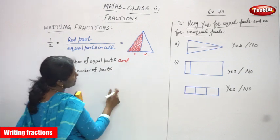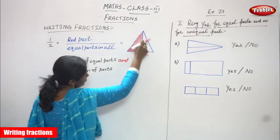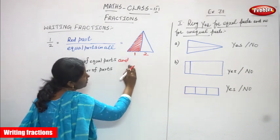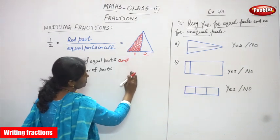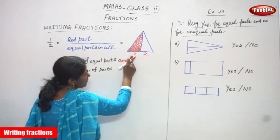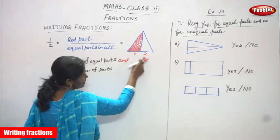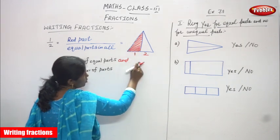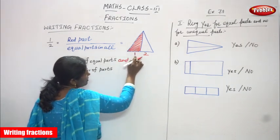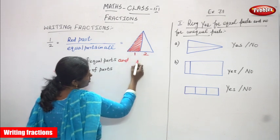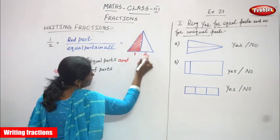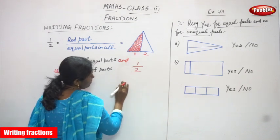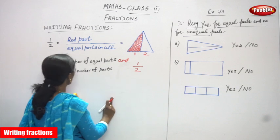We have to take only this total triangle. Then we have to cut it into two equal halves. This is one part, this is another part — that is two parts. Only one part I've shaded. So, shaded part is only one, that is red in color. Shaded part is 1 and total number of parts is 2. So I've taken only one part from the total number of parts. That is called as 1 by 2.